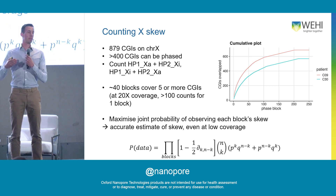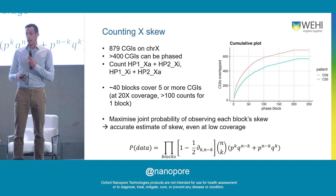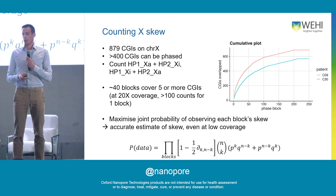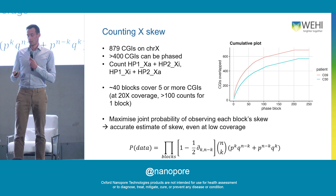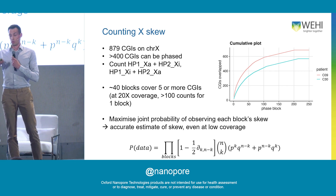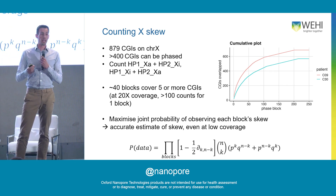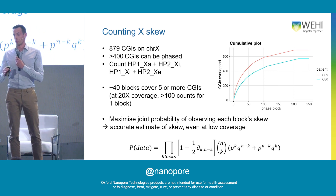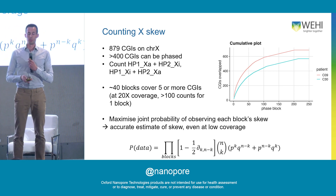You count how many times haplotype 1 is found as active, and for each block you get a skew estimate. Then it's a matter of calculating the maximum likelihood estimate for the skew overall in the sample. You can get very accurate estimates because you've got hundreds of blocks and they can overlap multiple CpG islands.